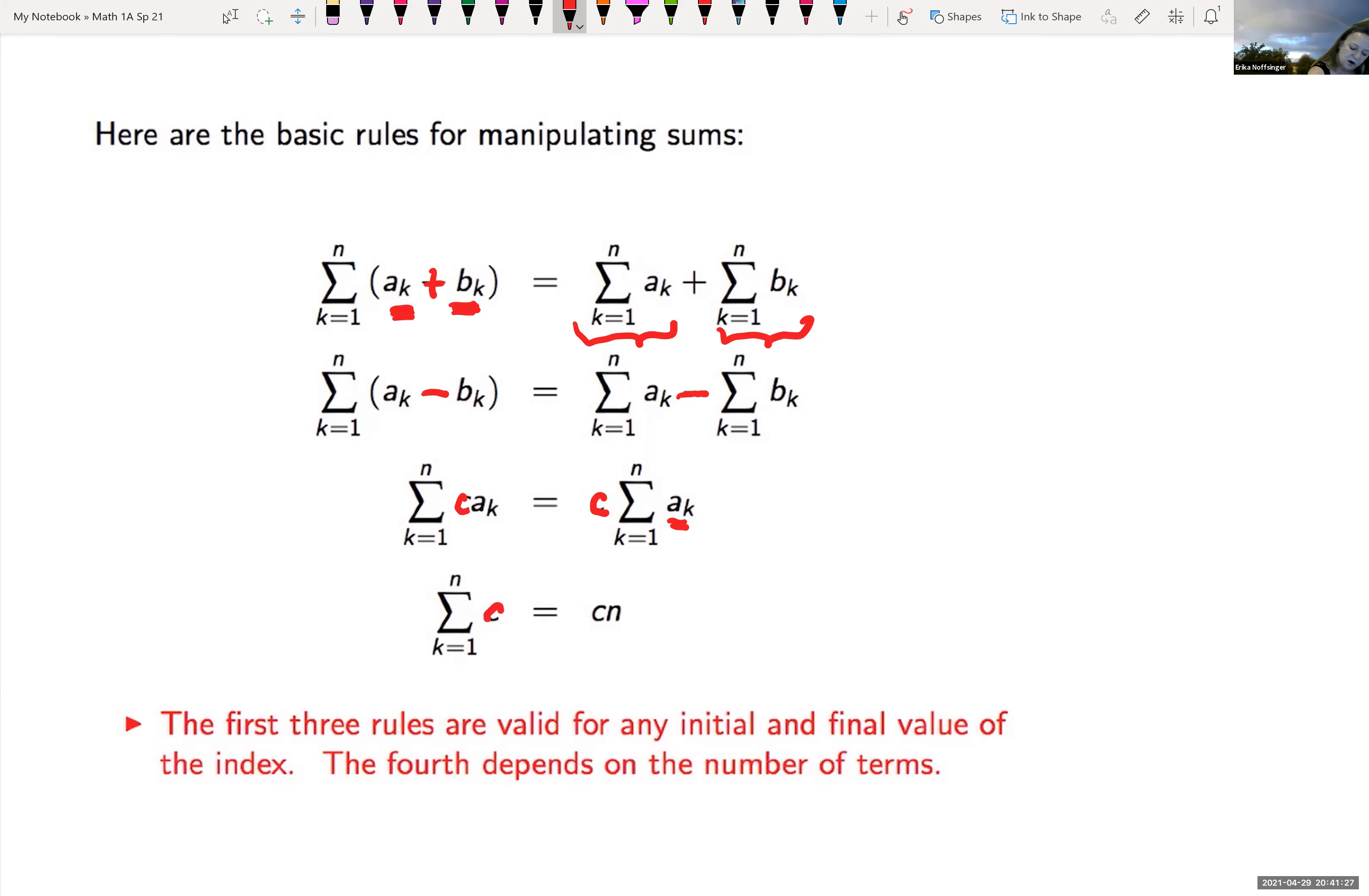Notice if you have some constant here, doesn't matter what it is, if you're looking at a summation of c from one to n, well, there's no variable in here. And so basically you're just adding c by itself n times, which is the same thing as c times n. So it says the first three rules are valid for any initial value and final value of the index. The fourth depends on the number of terms.